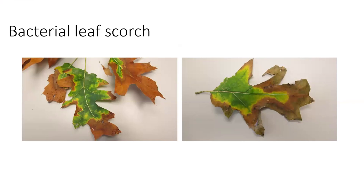I'd like to contrast oak wilt with another prevalent disease called bacterial leaf scorch. This is a bacterial disease — the bacteria reside in the vascular system of the oak, causing sectional dieback. It starts with similar symptoms to oak wilt and can also be confused with drought stress. However, this disease will not kill the tree as fast as oak wilt — normally it takes three to five years. There is no scientific finding showing a resistance difference between red oak and white oak for bacterial leaf scorch.